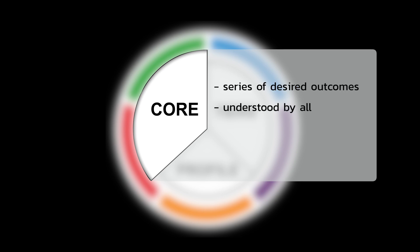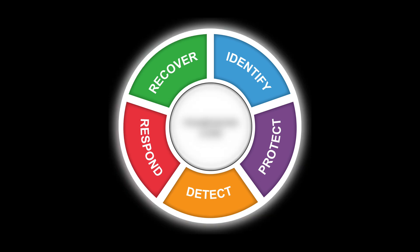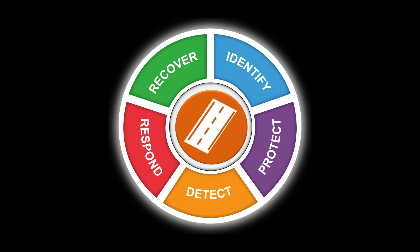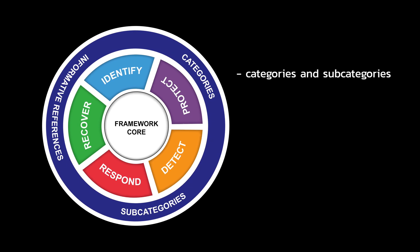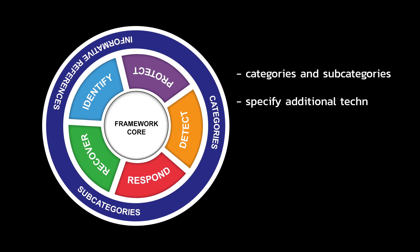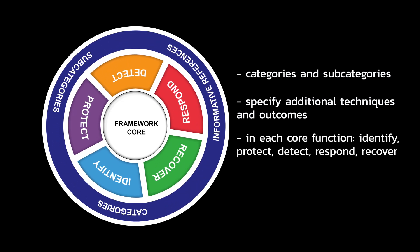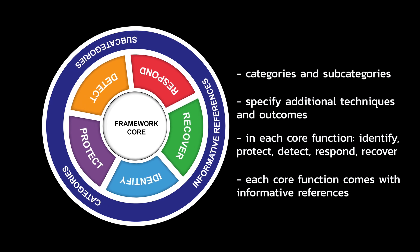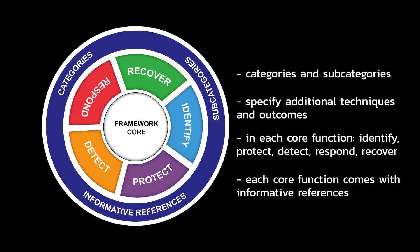The NIST framework core seeks to establish a series of desired cybersecurity outcomes in a common language that can be understood by everyone. The core is made up of five functions – identify, protect, detect, respond and recover. Read in this order, the functions set a basic roadmap for organizations to better manage risk. Each core function is further broken down into separate categories and subcategories, which specify additional techniques and outcomes necessary for better cybersecurity. Each core function also comes with informative references, which are cybersecurity standards among sectors that illustrate how to implement each subcategory correctly.